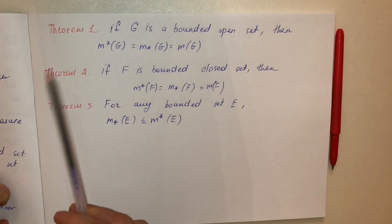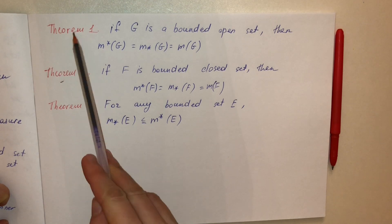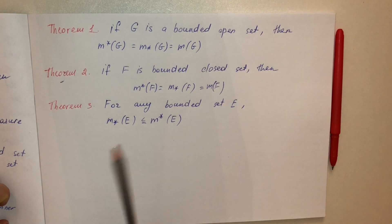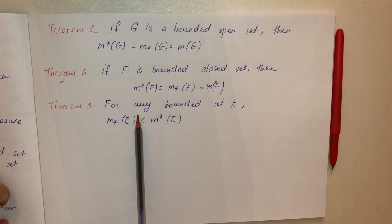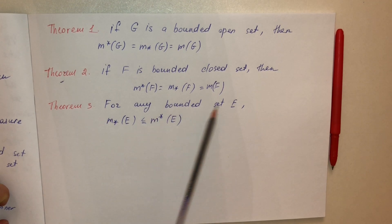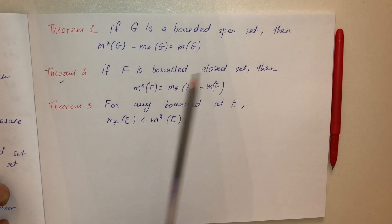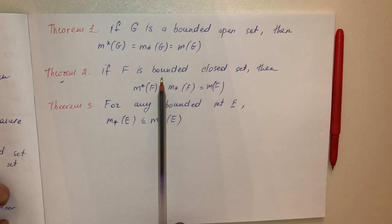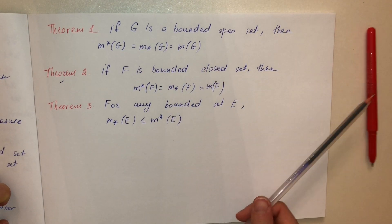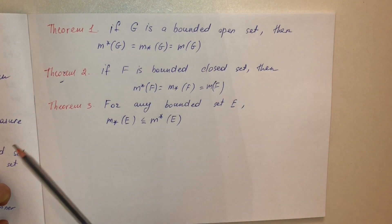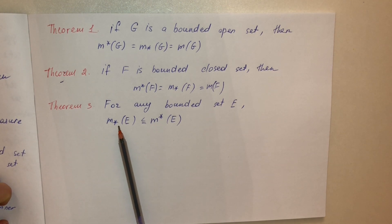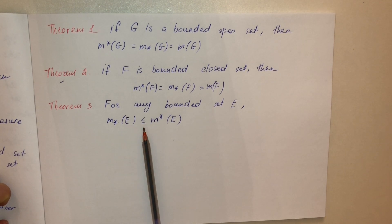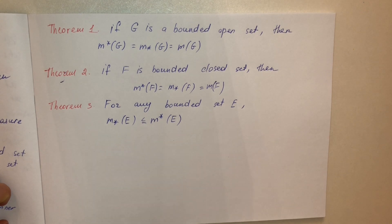From these two theorems we get Theorem 3: For any bounded set E — whether it is bounded open, bounded closed, or neither open nor closed — the inner measure is always less than or equal to the outer measure.